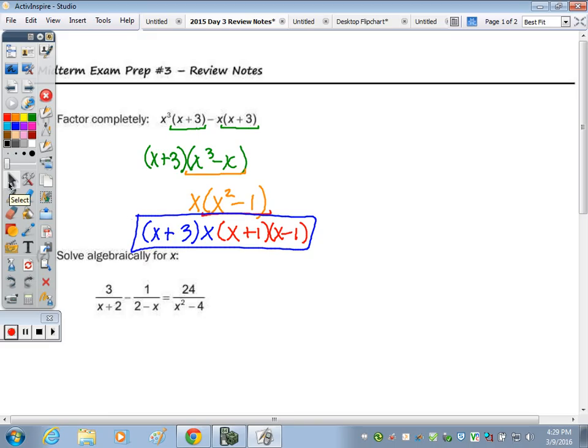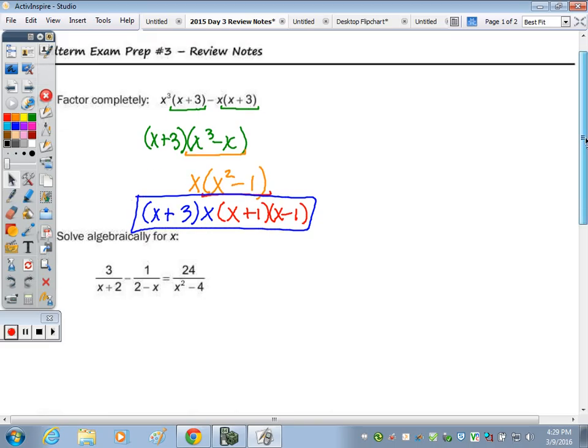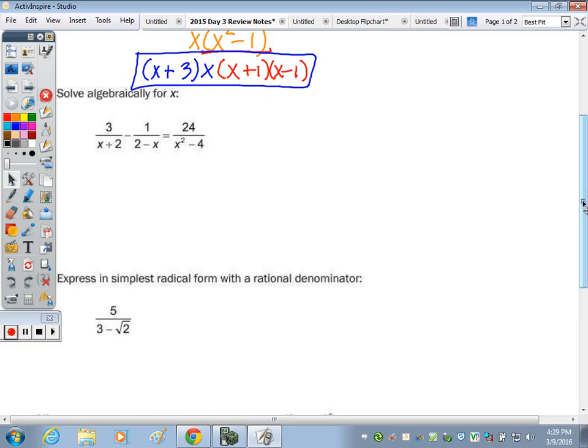Number two, we have a rational equation. The first step with a rational equation is to get all of the denominators the same, so then we can cancel them out, and only can we cancel them out when we have an equation. So we want to factor any expression in the denominator that is factorable. I want each denominator to have the exact same factors.